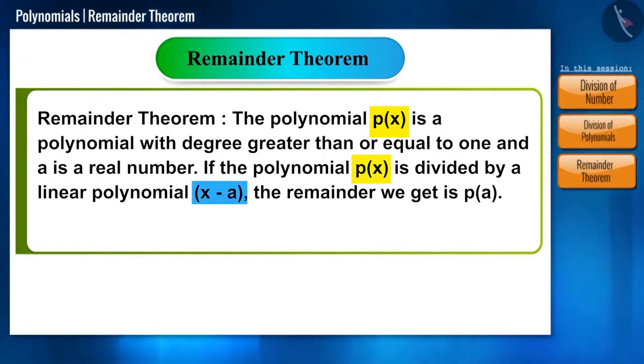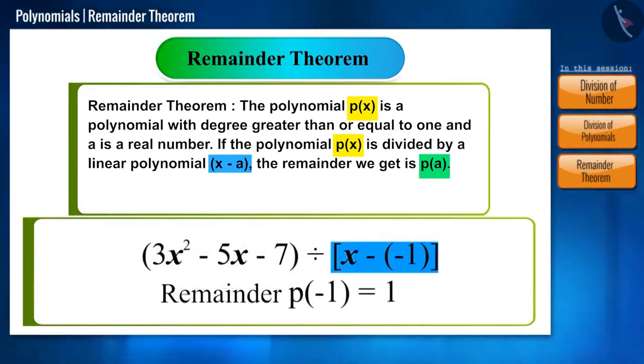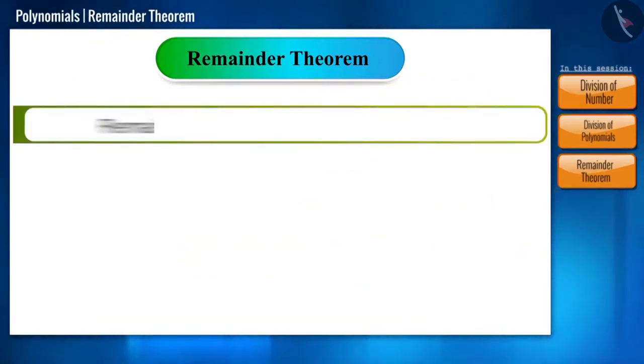Now, let's compare this with our previous example where we divided the polynomial 3x squared minus 5x minus 7 by a linear polynomial x minus minus 1 and we got the remainder p of minus 1 is equal to 1.